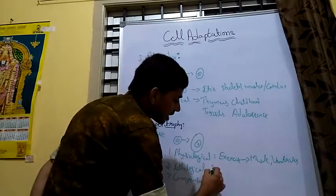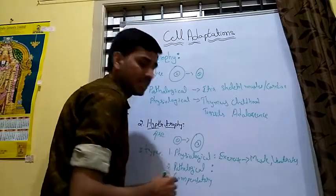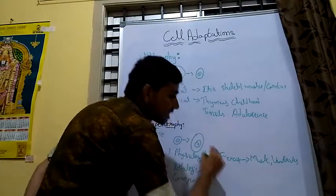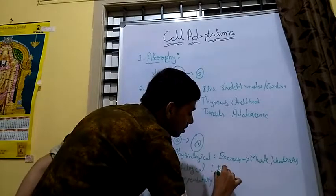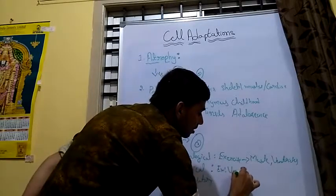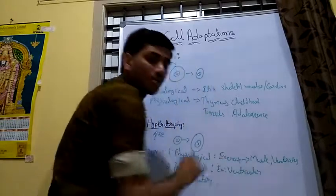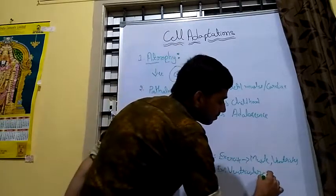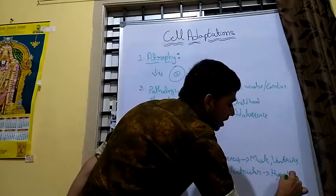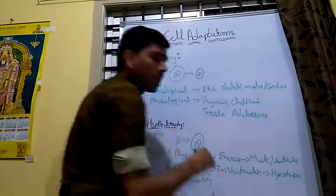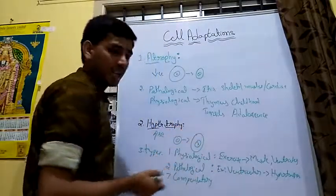In pathological conditions, any disease conditions or pathological changes lead to increased size of the cell. For example, ventricular hypertrophy occurs in the condition of hypertension. In hypertension, the ventricles are hypertrophied. This is a pathological condition.